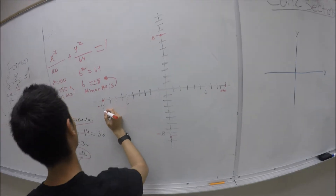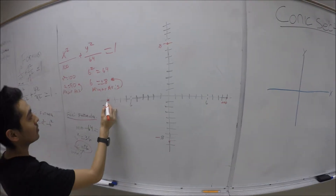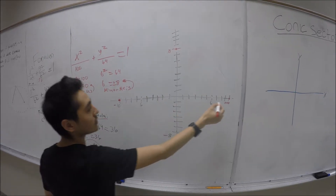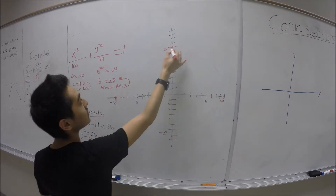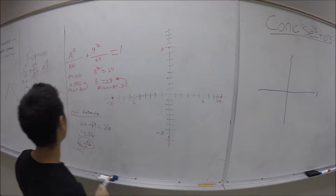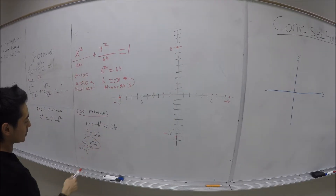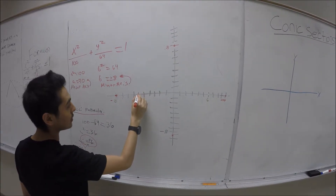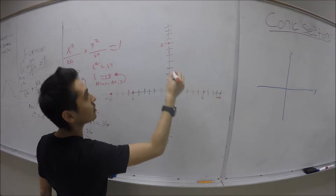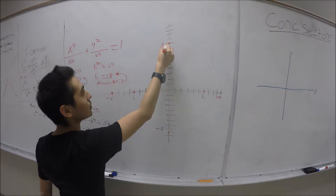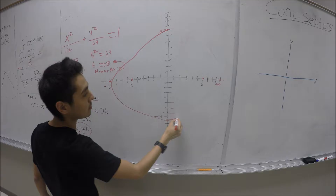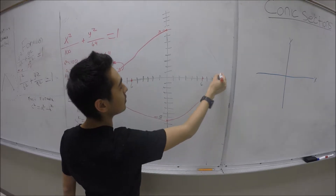This right here is our center, which is (3, negative 2), and our radius equals 4. That's how a circle looks. An interesting fact is that a circle has an infinite number of lines of symmetry.